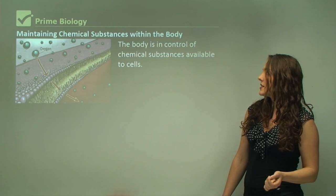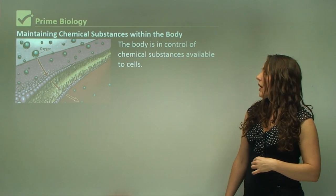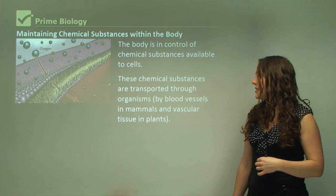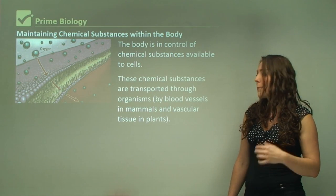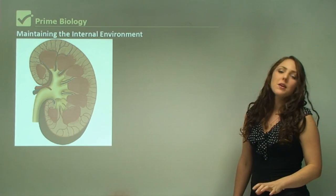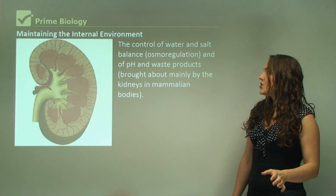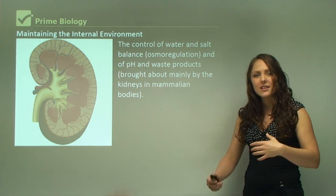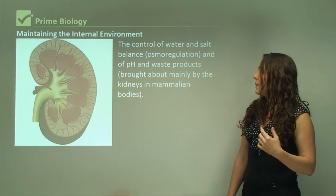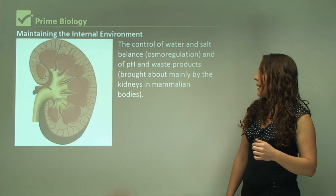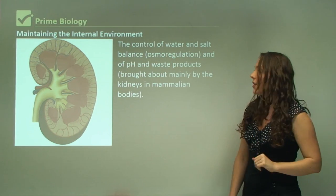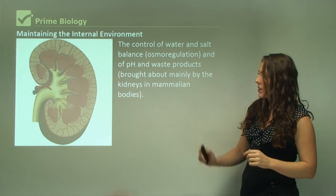The body controls chemical substances available to cells, which are transported through blood vessels in mammals and vascular tissue in plants. The control of water and salt balance is done by the kidneys — a process called osmoregulation. pH and waste products are managed mainly by the kidneys in mammalian bodies.